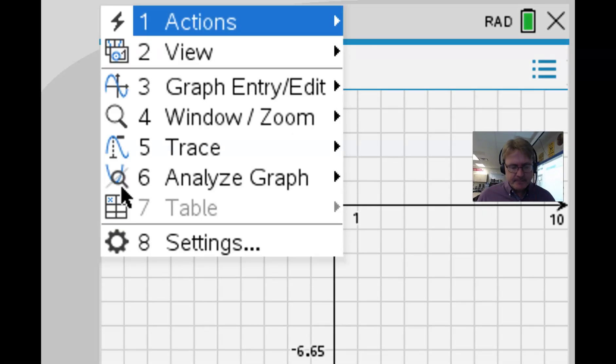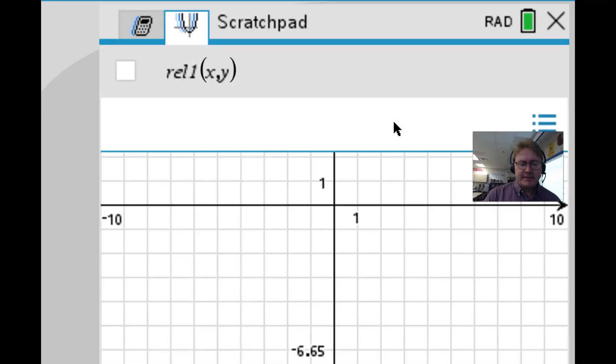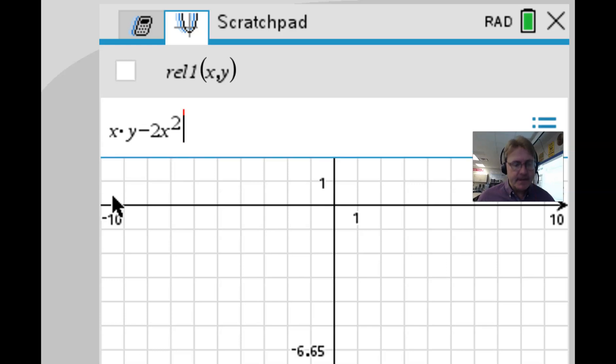We're going to hit this menu button and I'm going to change the graph entry line to that of a relation. And what this will allow me to do is to type in an equation that has x's and y's all mixed together. So that implicit equation in the second line in that green column was x times y—it's very important that we put a multiplication between the x and the y—minus 2x squared plus y to the third, and then all of that would be set equal to x plus y. And you actually physically type in an equal sign. That's a little bit different than what you would have done if you were graphing a function for sure.